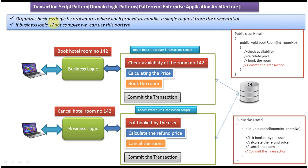Now you understand: it organizes business logic by procedures. We have two business logics with two different procedures, where each procedure handles a single request from the presentation — one handles booking, the other handles canceling. We can use this design pattern when business logic is not complex, involves fewer tables, and is not much complicated. That is the Transaction Script design pattern. Thanks for watching, bye.